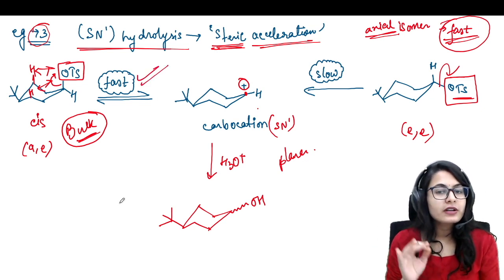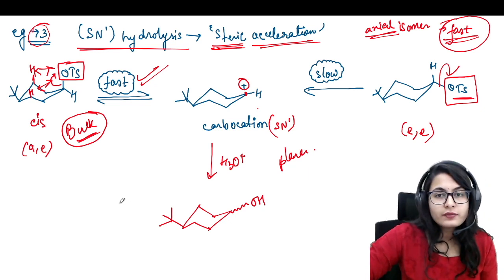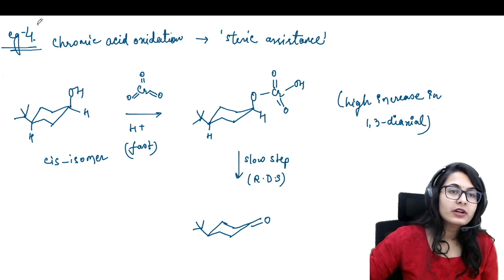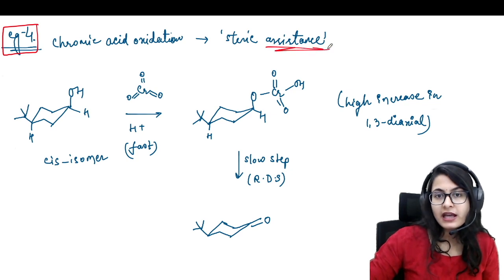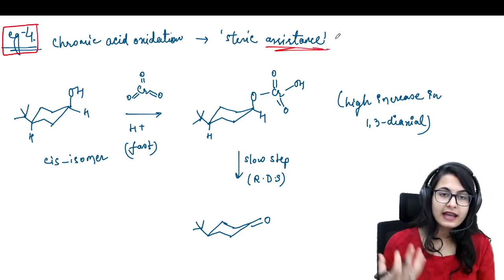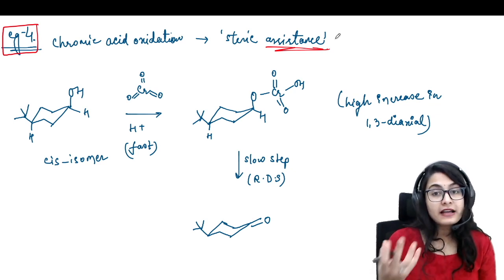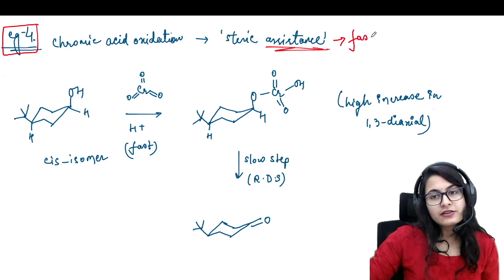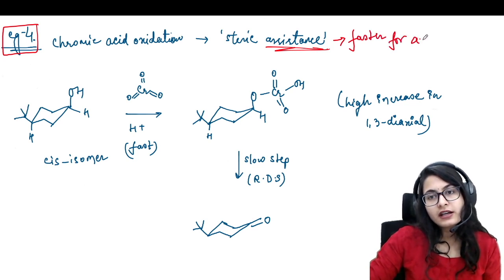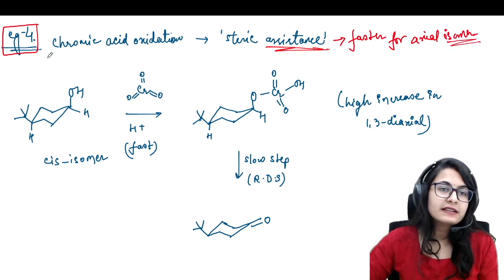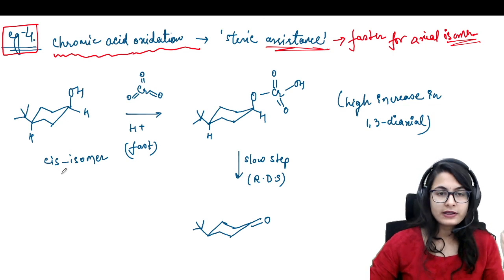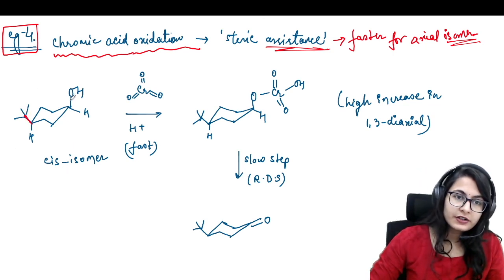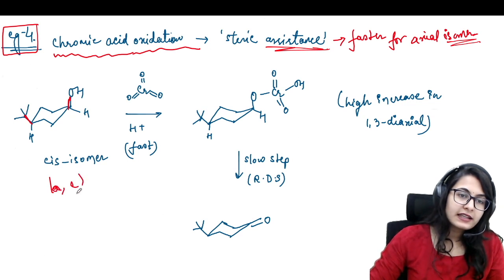So this is a case when the axial isomer is reacting faster because it wants to push away the bulky group as soon as possible — steric acceleration for the axial isomer. Moving onwards, example number four. This is once again the second example of steric assistance — the axial isomer gives a faster reaction. This is the chromic acid oxidation of your alcohol. We have once again the cis isomer, which is axial and equatorial.